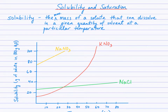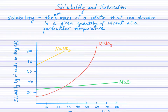Solubility and saturation. We have so far approached solubility from a very qualitative approach. We've looked at solubility guidelines and said that an ionic substance dissolves in water or it doesn't — if it doesn't, it's forming a precipitate. Solubility is actually defined quantitatively: it's the maximum mass in grams of a solute that can dissolve in a given quantity of solvent at a particular temperature.